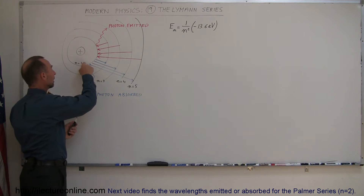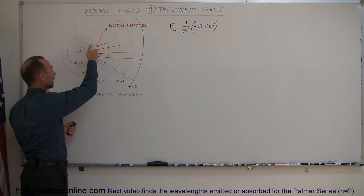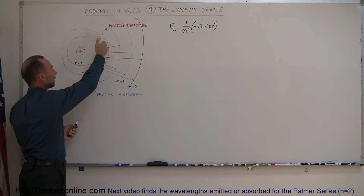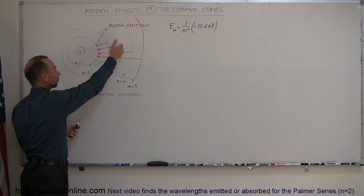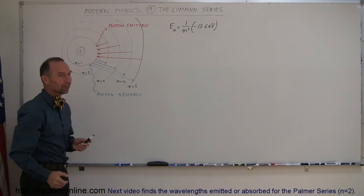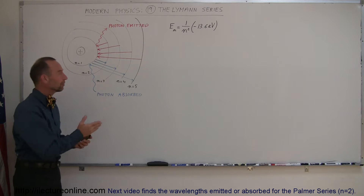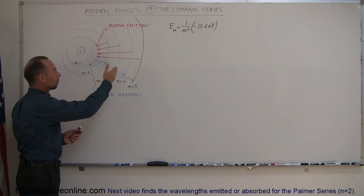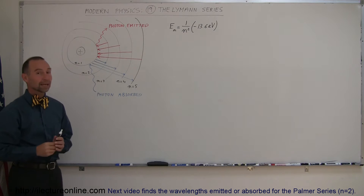This is the n equals 1 energy level, the innermost energy level, then n equals 2, n equals 3, n equals 4, n equals 5 — representative of the energy levels the electron can be in.